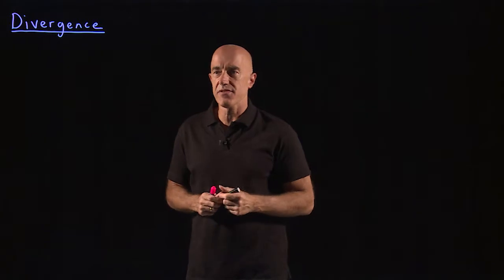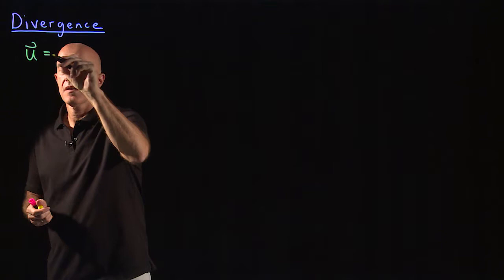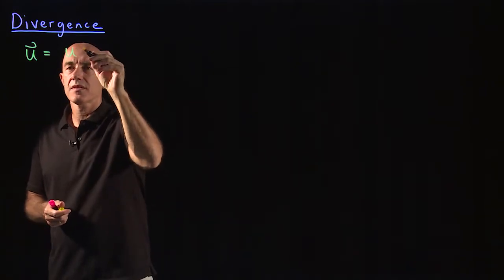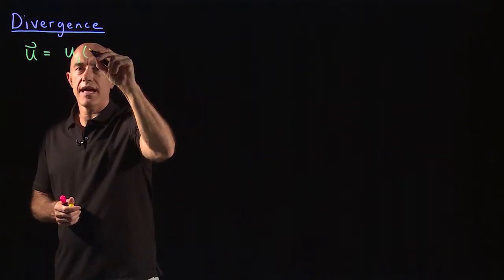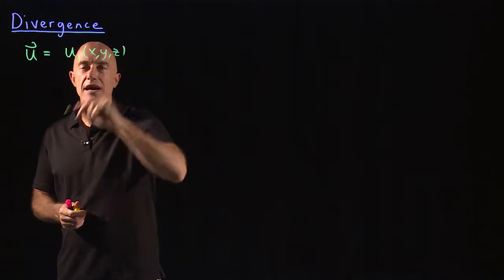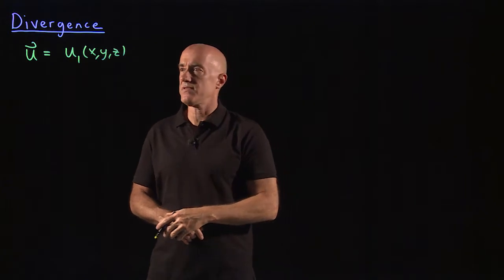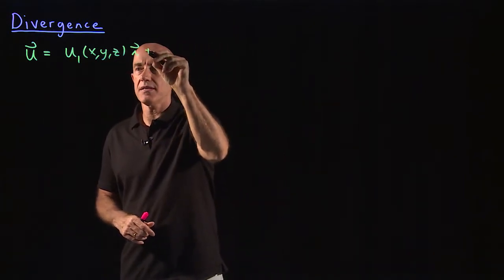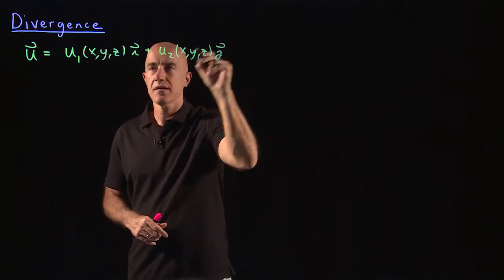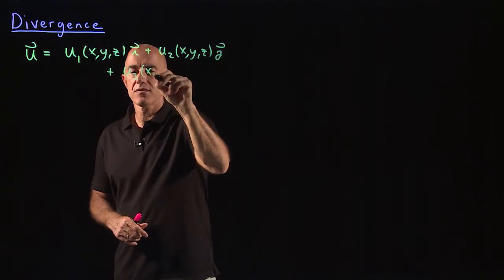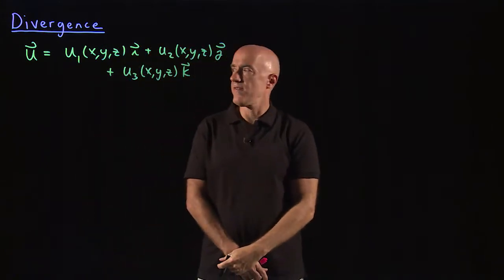So let's start with a vector field. We have a vector field u which is a function of x, y, and z. We don't have to worry about the time dependence here because we're only taking spatial derivatives. So u is u1(x,y,z) i plus u2(x,y,z) j plus u3(x,y,z) k. That's our vector field.